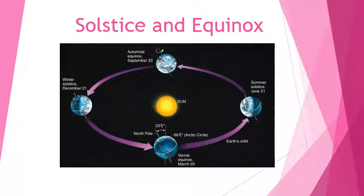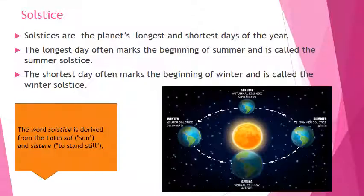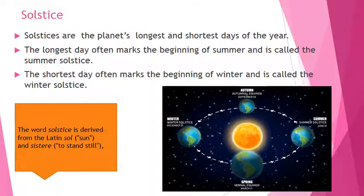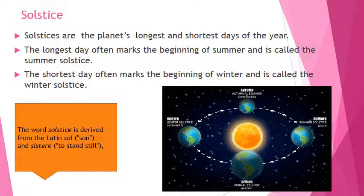Solstice and Equinox. Solstices are a planet's longest and shortest days of the year. The longest day often marks the beginning of summer and is called the summer solstice. The shortest day often marks the beginning of winter and is called the winter solstice.